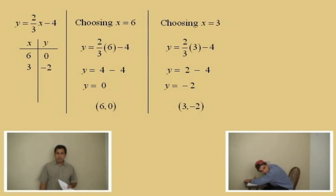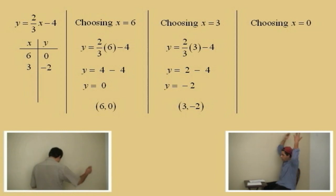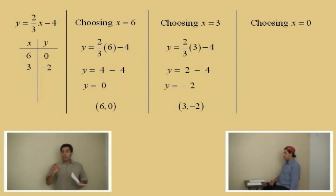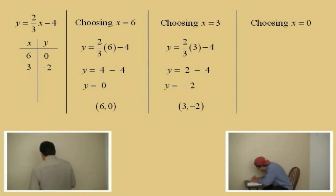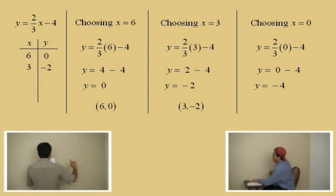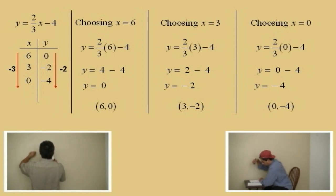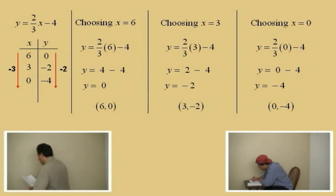We'll go for another point — usually we want 3 points when graphing lines. That way, when you draw your line and they all lie on a straight line, you know you're right. What's another good choice for x? Zero. x equals 0 will get rid of the fraction because 2 thirds times 0 will be 0. We get y equals 0 subtract 4, which is negative 4. So our ordered pair is 0, negative 4. We'll put it in our table. Notice the x values are decreasing by 3's and the y values are decreasing by 2's — that's the pattern called the slope of a line. We'll talk more about that later.